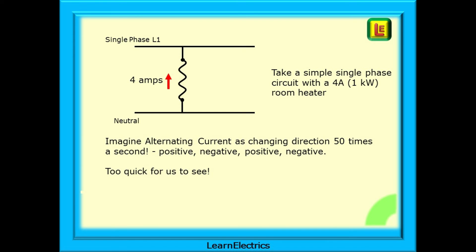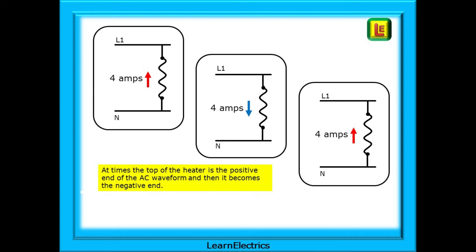Now imagine this as alternating current. It is changing direction 50 times a second. Parts of the circuit are going positive-negative, positive-negative, far too quick for us to see. Sometimes the top of the heater is the positive end, sometimes the bottom. It doesn't matter to us, and as it is all single-phase, it makes no difference to the circuit.